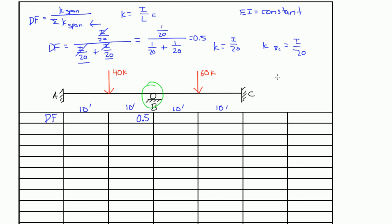Same thing for the right side. The only thing we change is the top k span. Spans AB and BC are exactly the same in length and moment of inertia, so the k value of BC is 1 over 20 divided by 1 over 20 plus 1 over 20. Same thing — you get 0.5. So on the right side of B, I'm going to write 0.5.